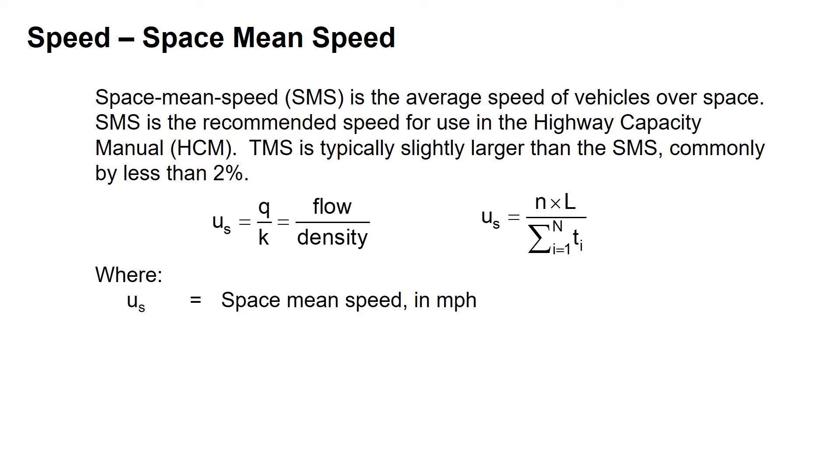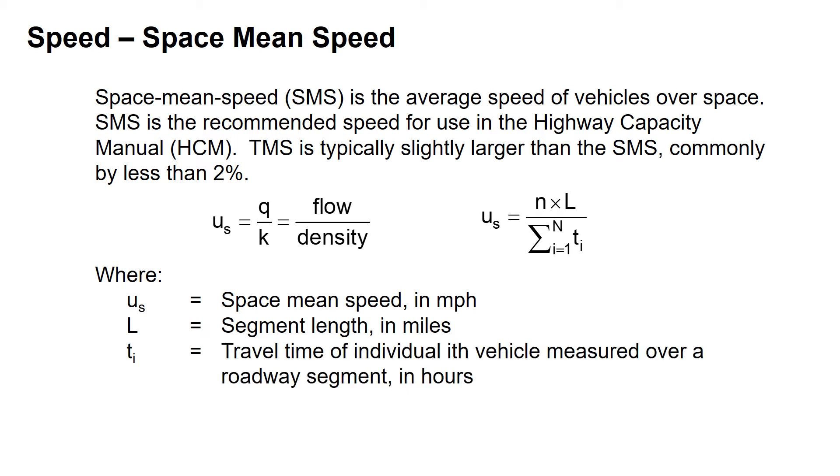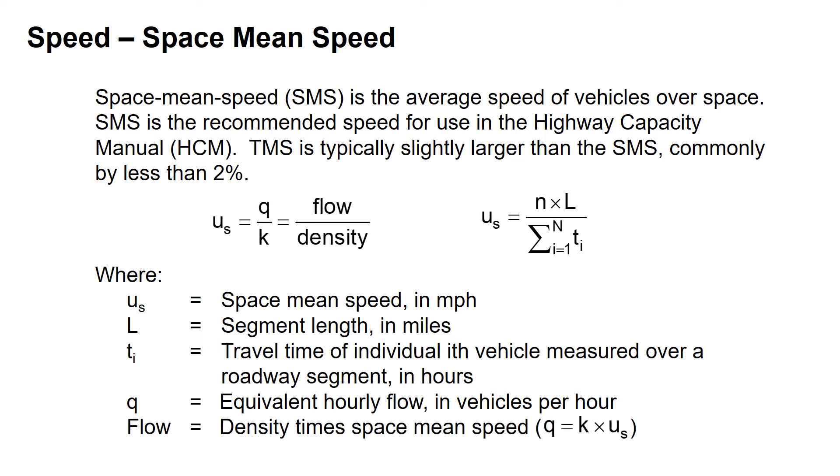U sub S is the Space Mean Speed in miles per hour. L is the segment length, typically in miles. T sub I is the travel time of the individual I-th vehicle measured over a roadway segment, typically in hours. Q is the equivalent hourly flow in vehicles per hour. Flow equals density times Space Mean Speed, so Q equals K times U sub S. N is our sample size or the number of vehicles observed.